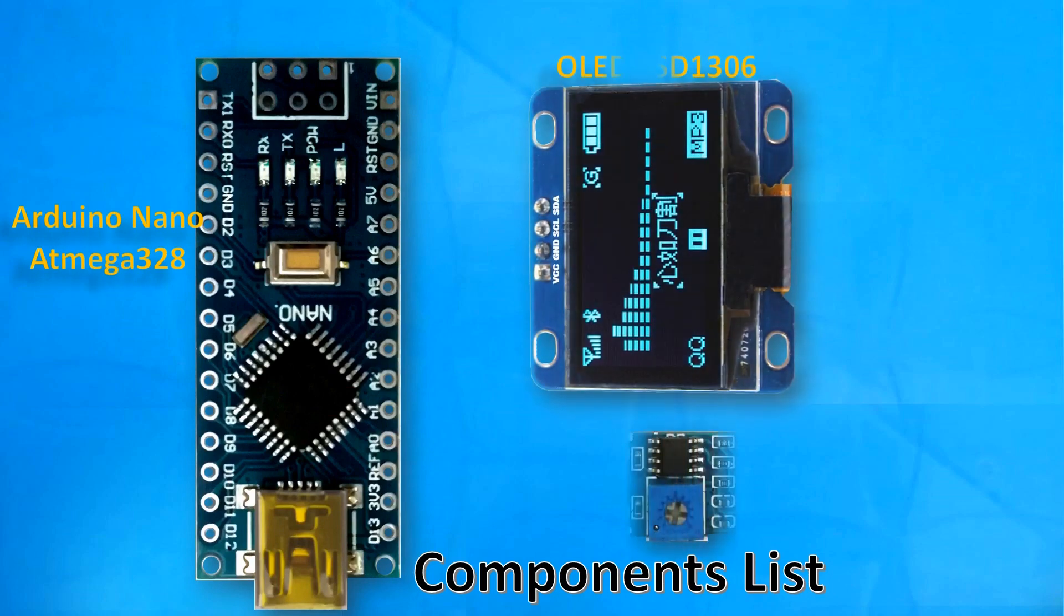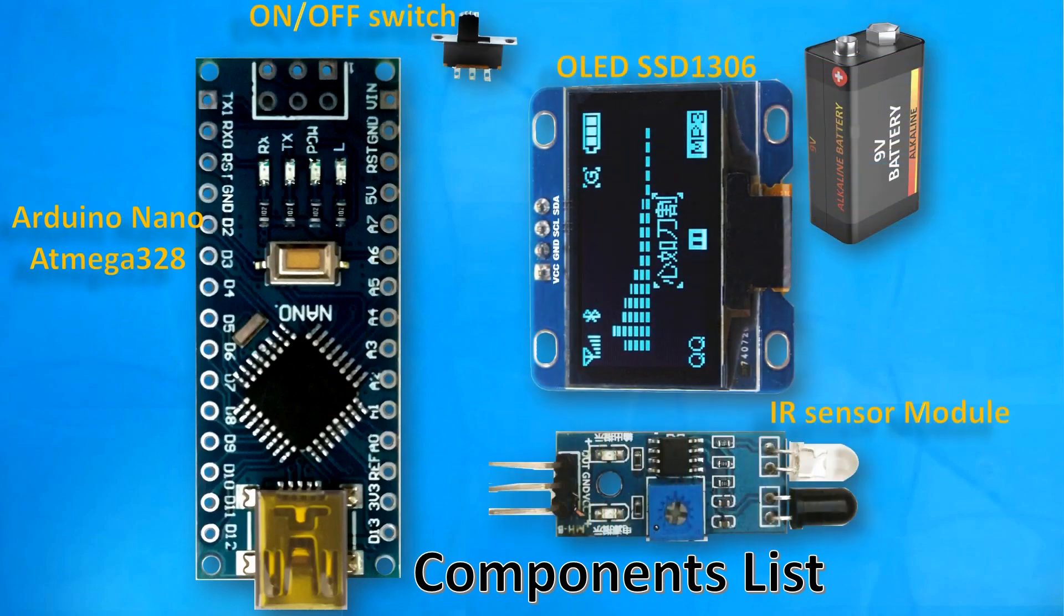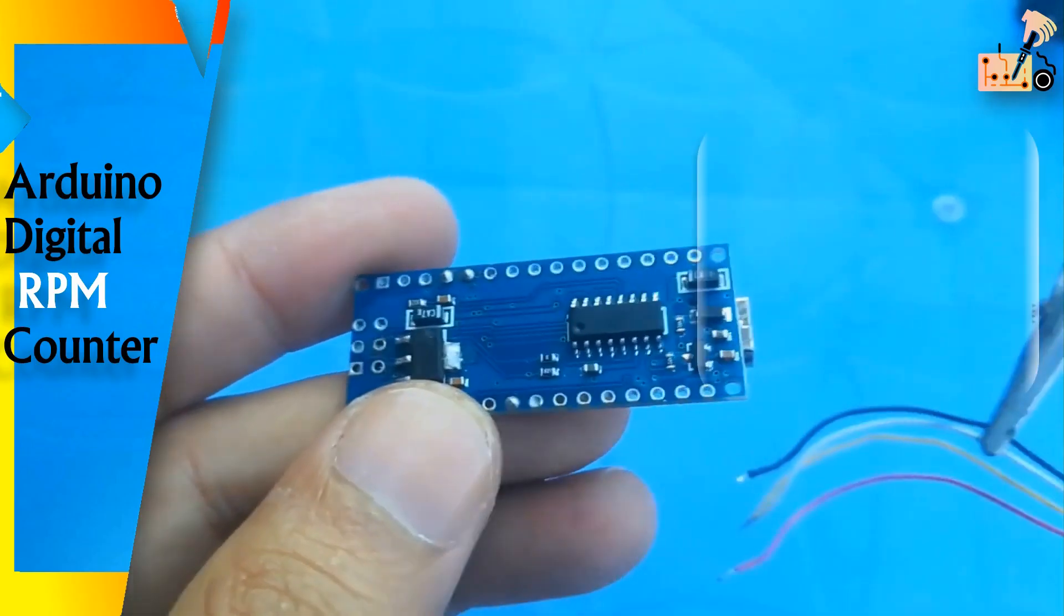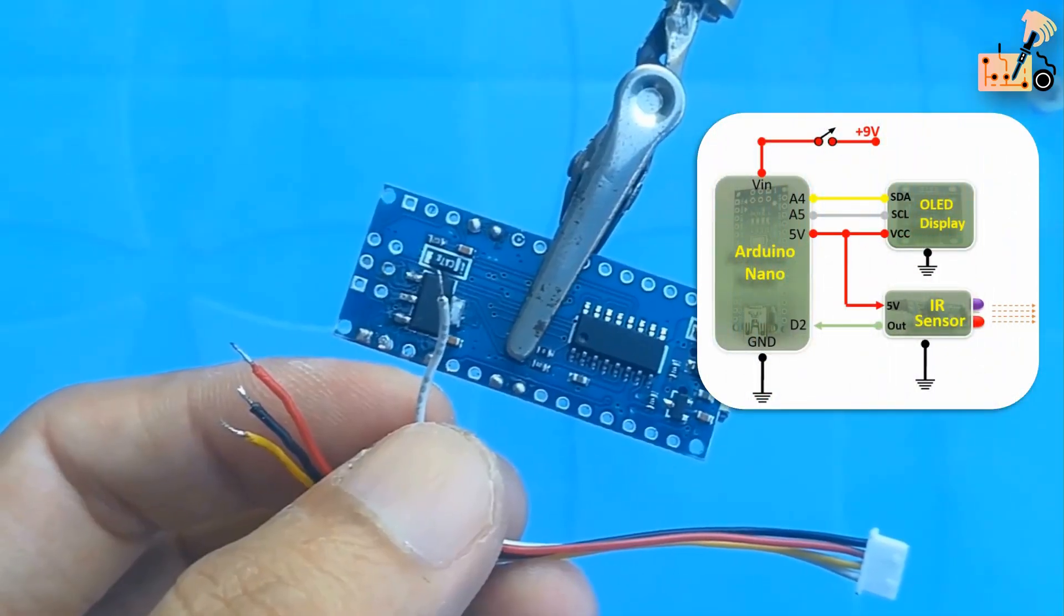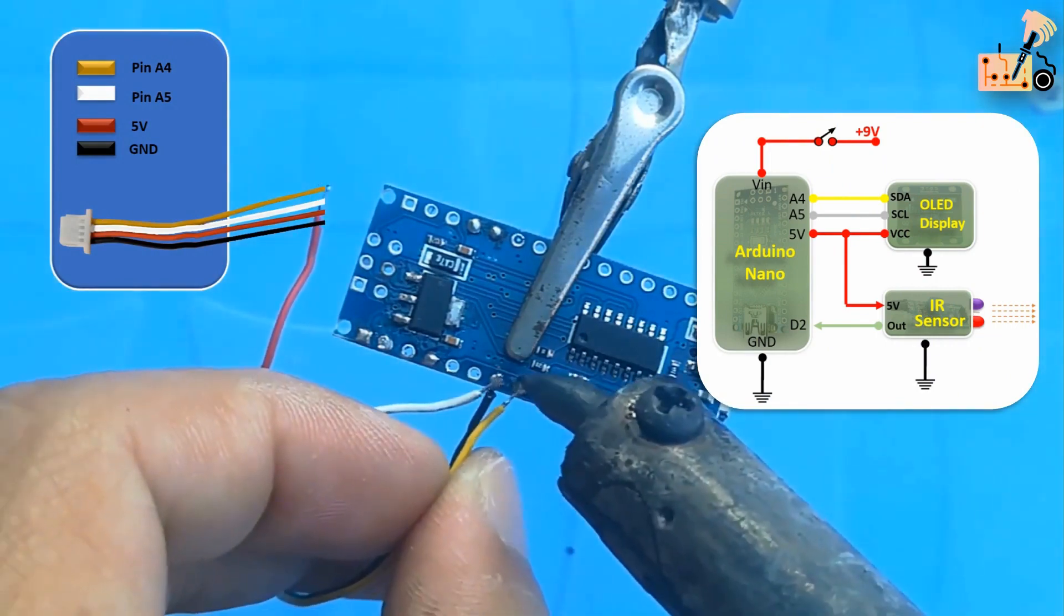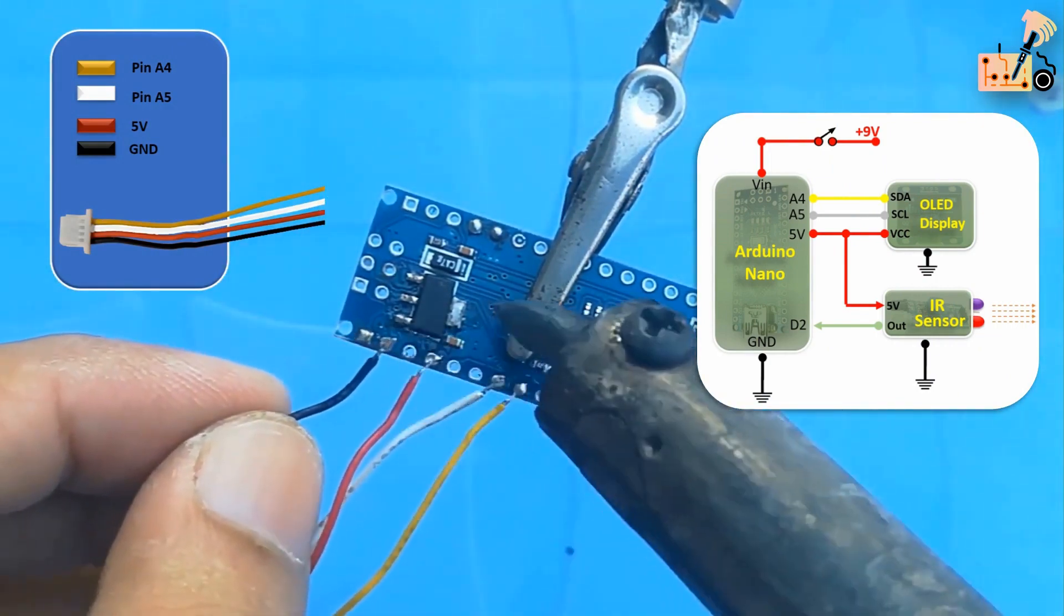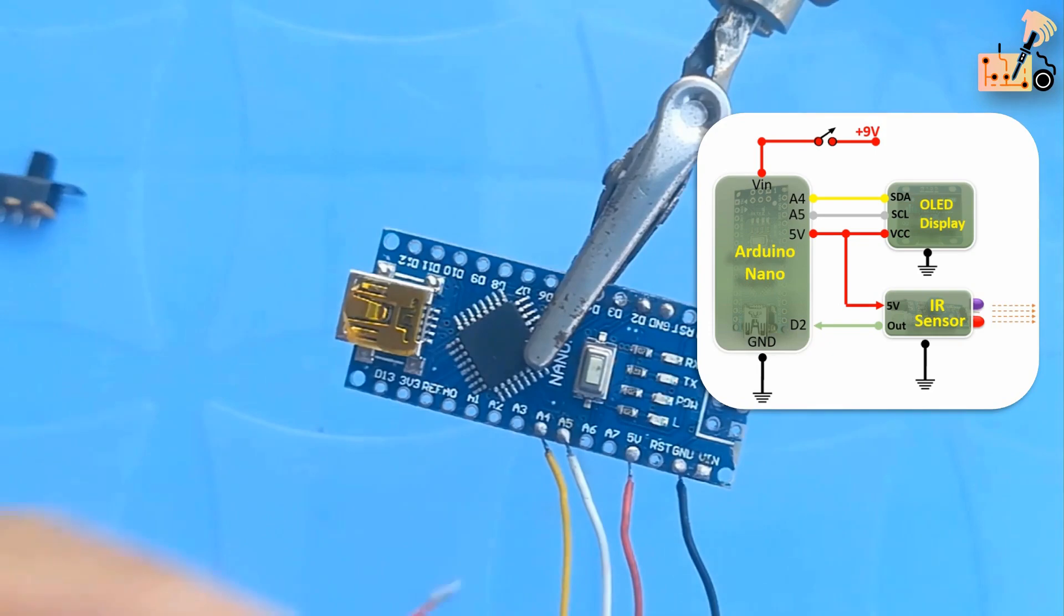In this video, you will learn how to build your own tachometer, RPM counter, with easily available components in the market. Follow the on-screen wiring diagram to seamlessly connect all three modules in your setup as demonstrated in this tutorial.